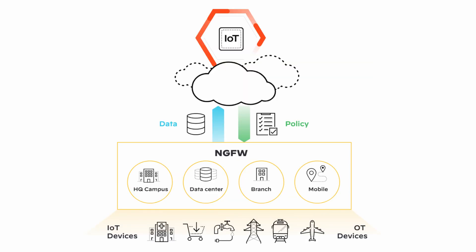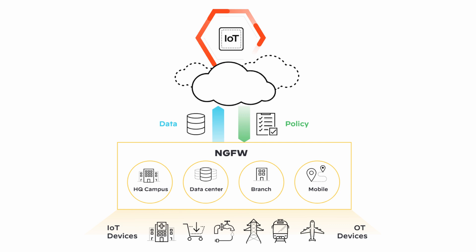PANOS 10 introduces a new concept for policy enforcement: Device ID. Device ID is a way to enforce policy rules based on device attributes. IoT security provides the firewall with a device dictionary file containing a list of device attributes such as profiles, categories, vendors, and models.